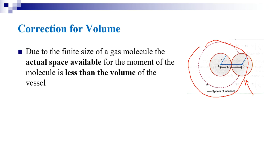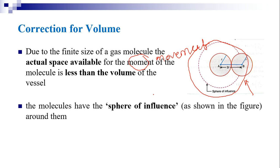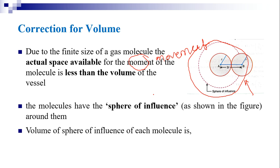Due to the finite size of gas molecules, the actual space available for movement of the molecules is less than the volume of the vessel. The volume of the sphere of influence of each molecule is given by S = (4/3)π(2R)³ = 8 × (4/3)πR³ = 8x, where x is the volume of one molecule (x = (4/3)πR³). So the volume of the sphere of influence is 8 times the volume of the molecule.